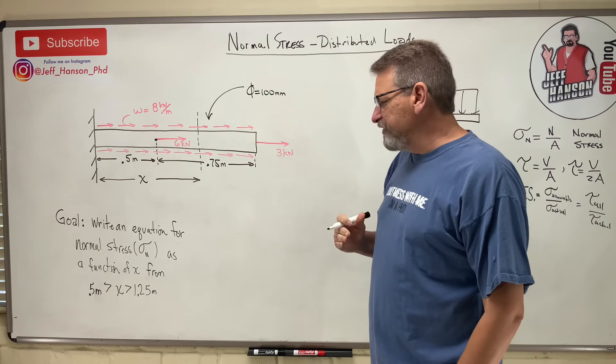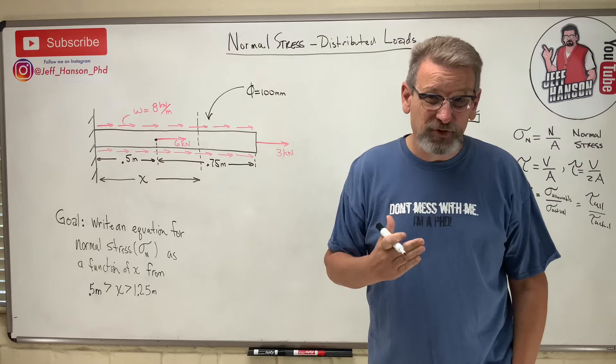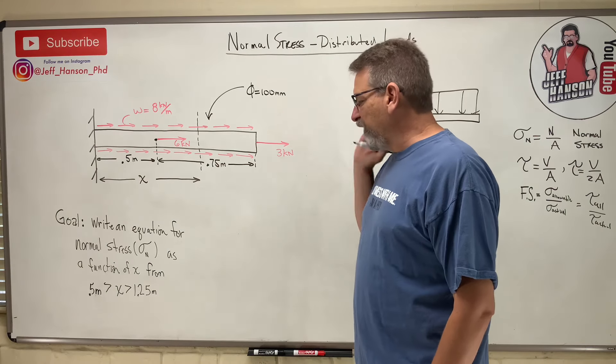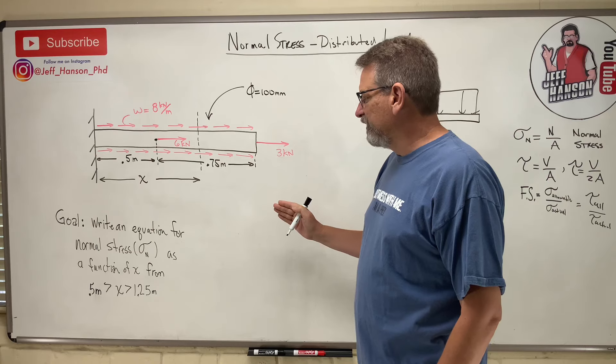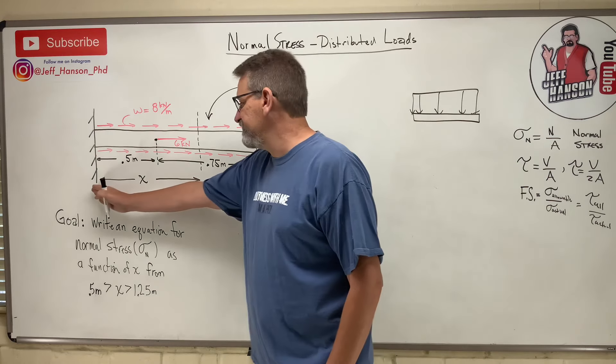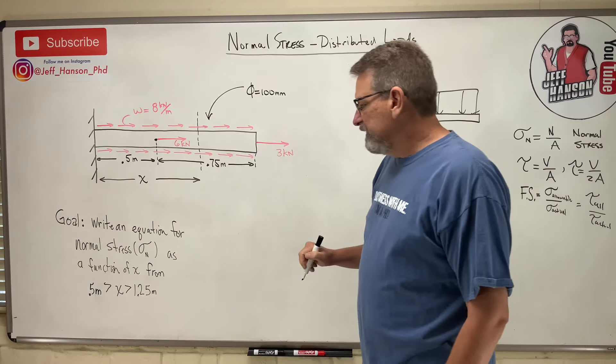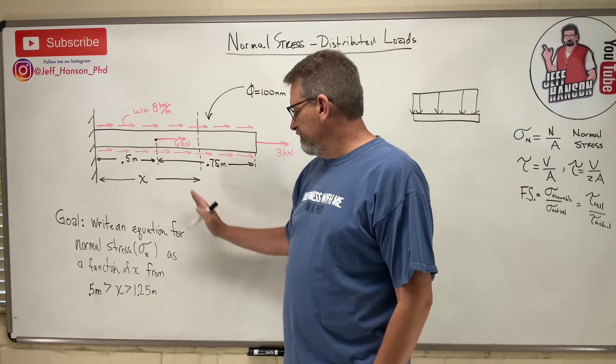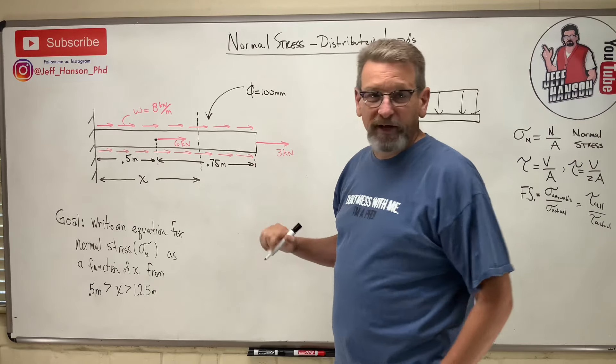They want us to write an equation for normal stress, sigma stress, that's p over a stress, right? As a function of x, what is x? x is just a distance from here over to here, from 0.5, which is this point here, to 1.25, which is this point out here.